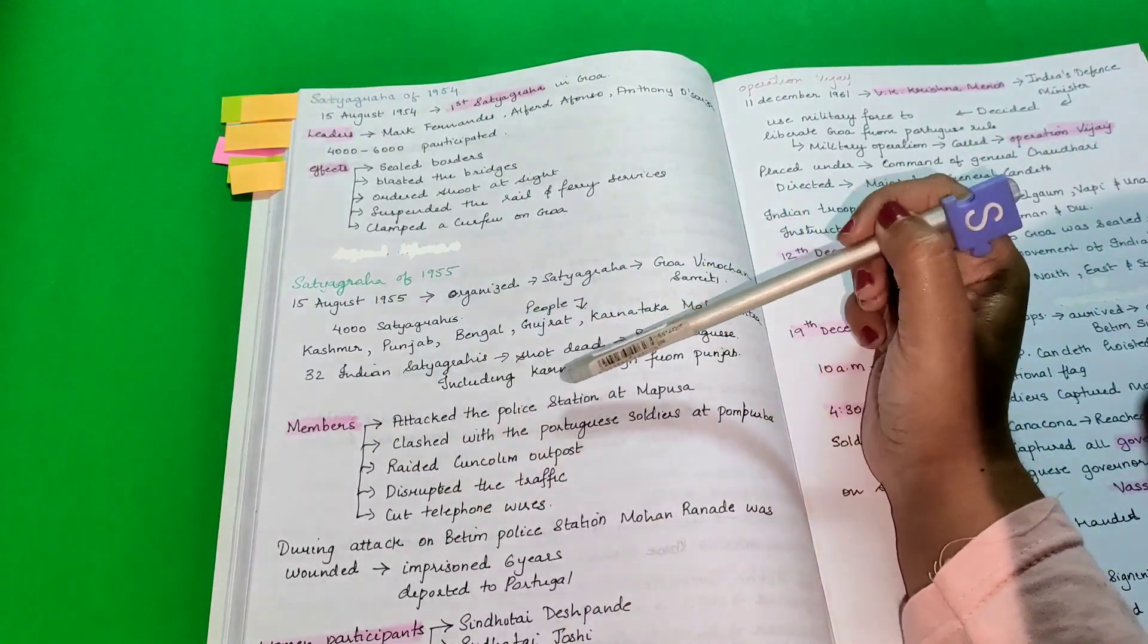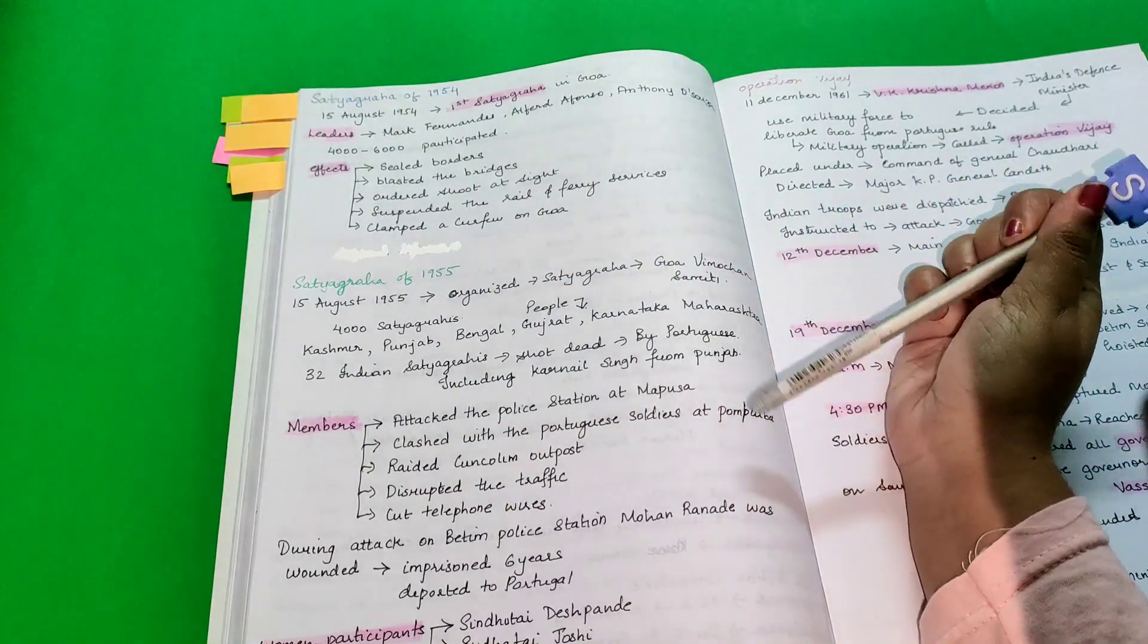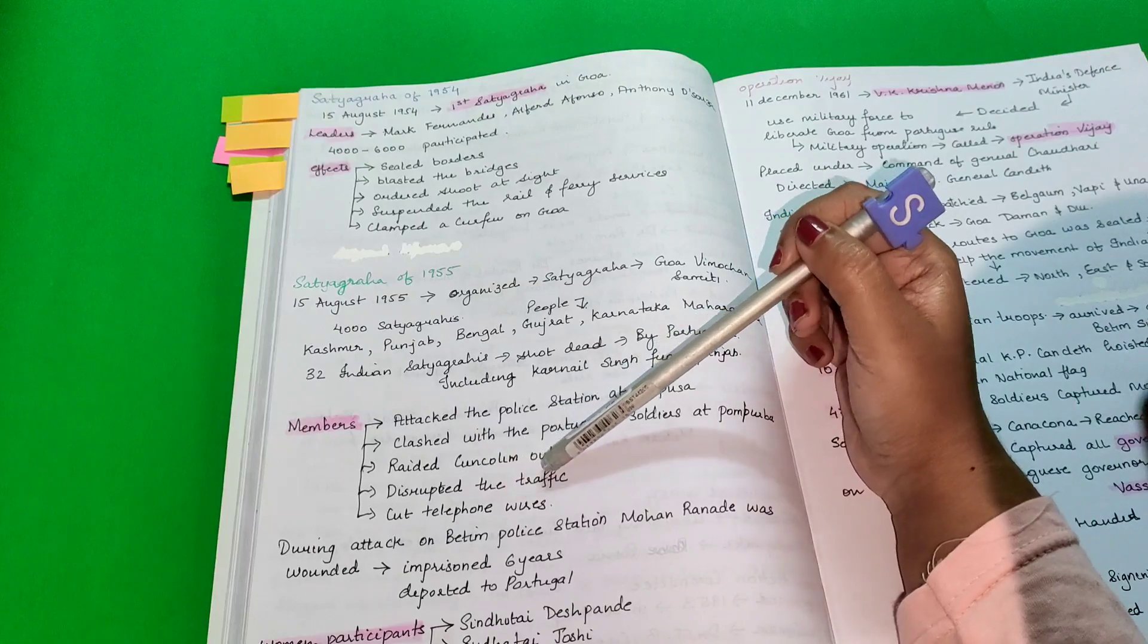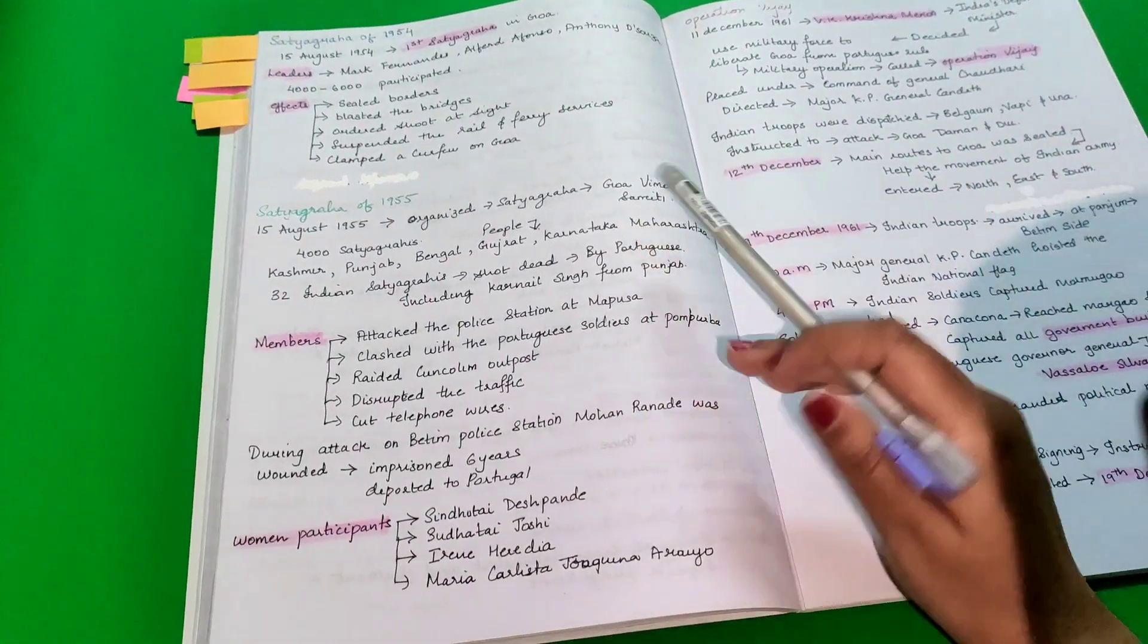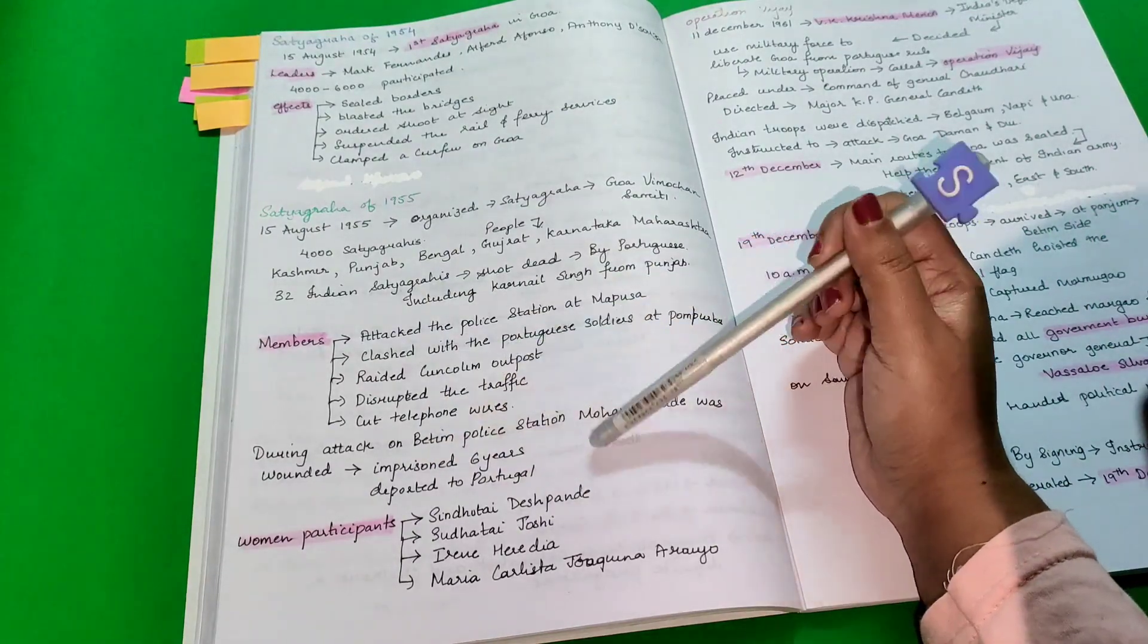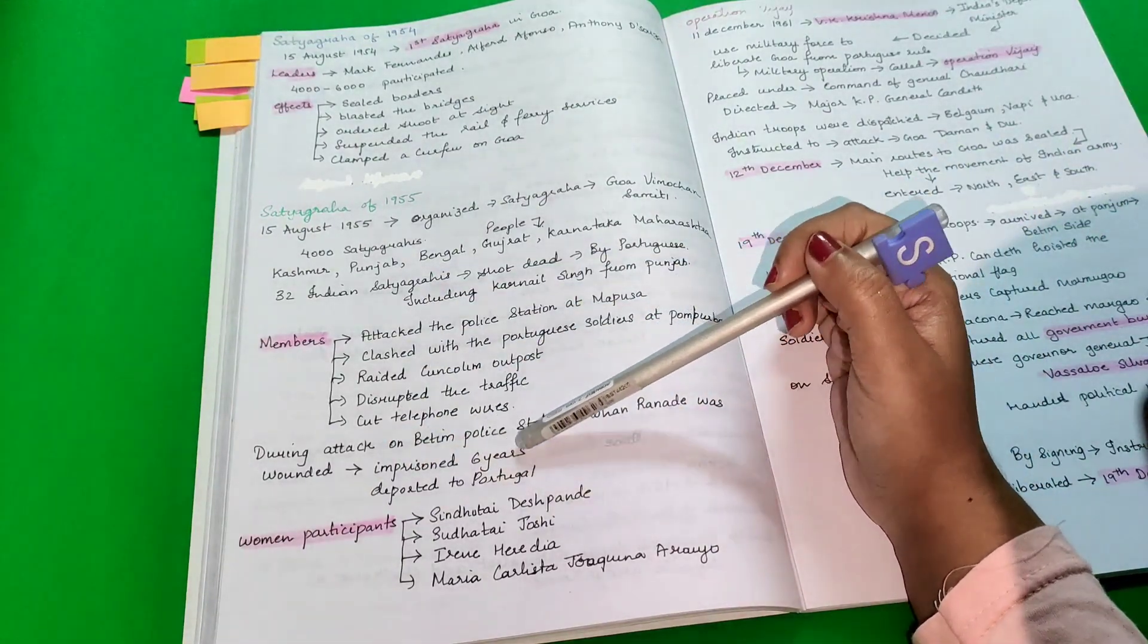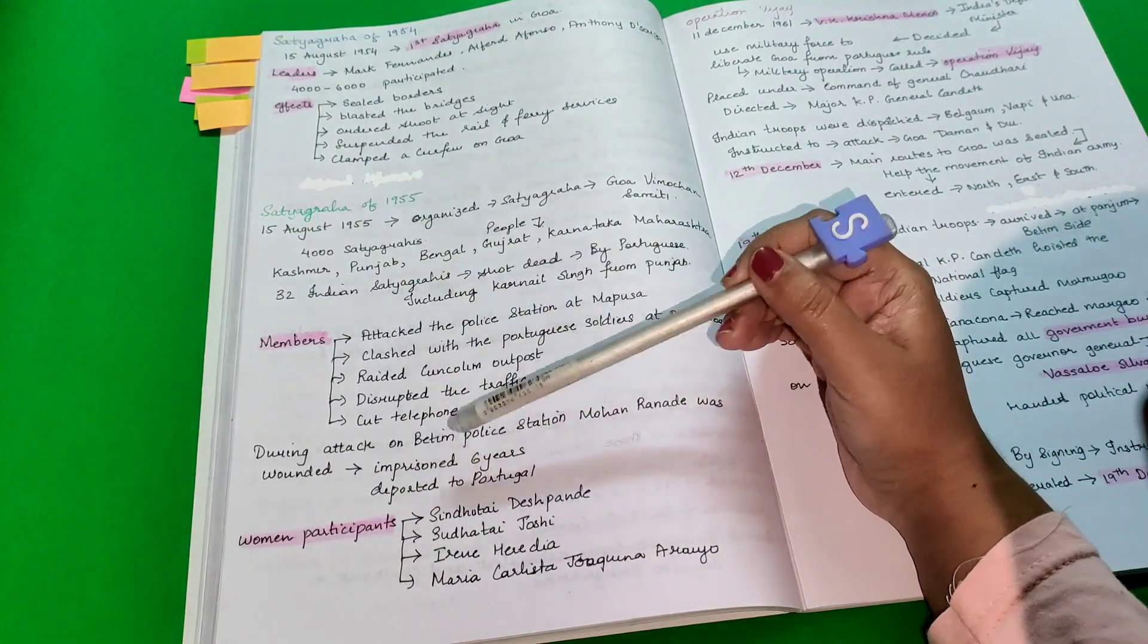The members attacked the police station at Mabsa, clashed with the Portuguese soldiers at Pombururpha, raided Kunkolem outposts, disrupted the traffic and cut telephone wires. During attack on Bicholim police station, Mohan Ranade was wounded and then he was imprisoned for six years and deported to Portugal.